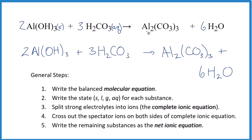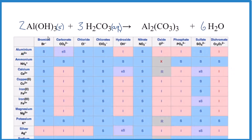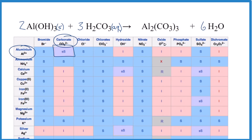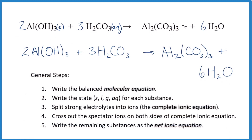Aluminum carbonate — let's look that up. Here's aluminum, here's carbonate. We go across: slightly soluble. When something's slightly soluble, we say it's a solid when we do net ionic equations. A little bit dissolves, but we're going to call it a solid because most of it will be in the solid form. So that's going to be solid, and water is a liquid.